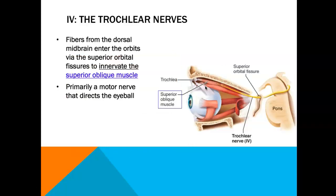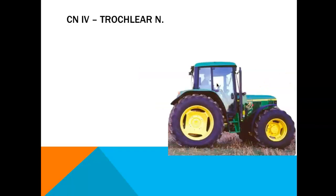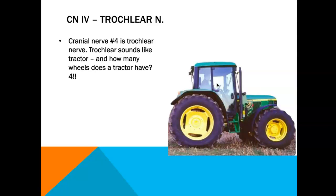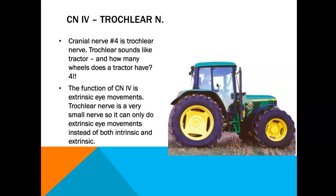Cranial nerve number four is the trochlear nerve. Its fibers travel from the dorsal midbrain, enter the orbit through the superior orbital fissure, and go to one specific extrinsic eye muscle: the superior oblique muscle. A memory tip: trochlear reminds you of tractor — how many wheels does a tractor have? Four! Also, the trochlear nerve is very small since it serves only one muscle, so it often tears when removing the brain from the cranial cavity and may not be visible in lab.